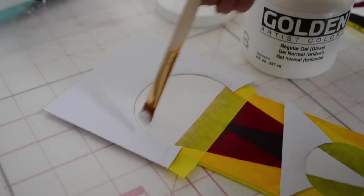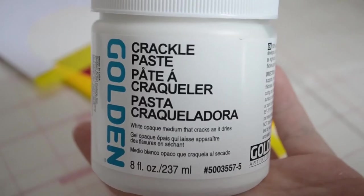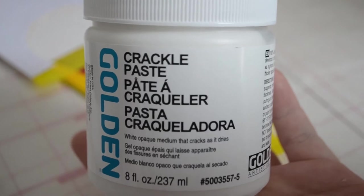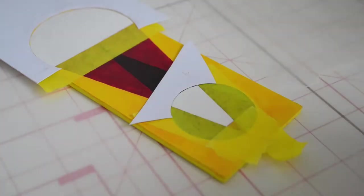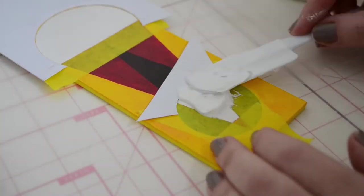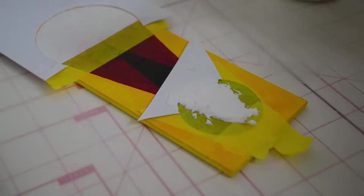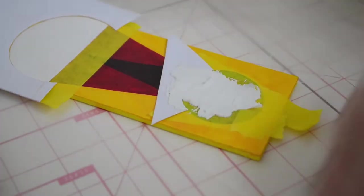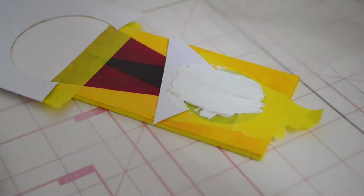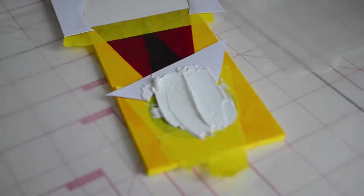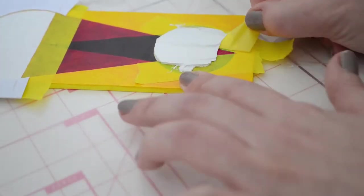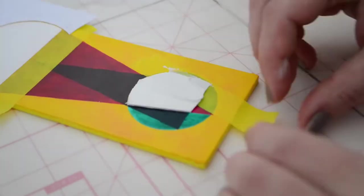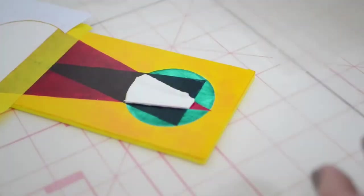Once I have it all masked, I add a layer of gloss medium. You can add some clear gesso. It does two things: it makes it easier for the paste to bond to the surface, and it also creates a barrier between the medium and the masking tape, which helps with creating that crisp edge we're going for.